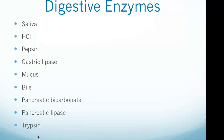Gastric lipase: origin is chief cells, meaning the stomach, and its function is to digest lipids and fats in the stomach. Mucus: origin is goblet cells, still in the stomach, and its function is to maintain the mucosal lining of the stomach and protect the stomach walls from the digestive activity of gastric enzymes such as hydrochloric acid. Bile: produced by the liver, but stored and concentrated in the gallbladder. The liver is involved in metabolizing and removing drugs and toxins, producing bile, and storing glycogen.